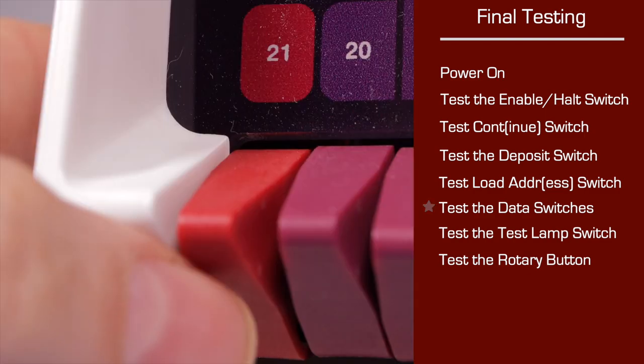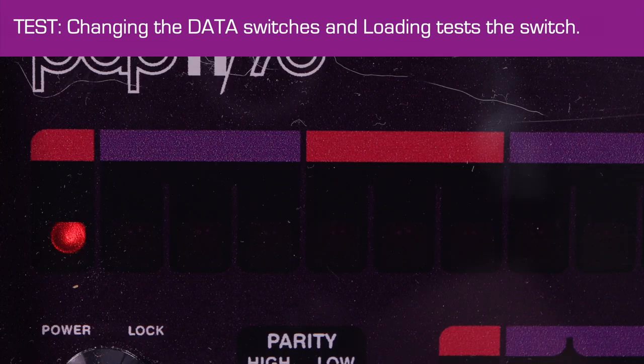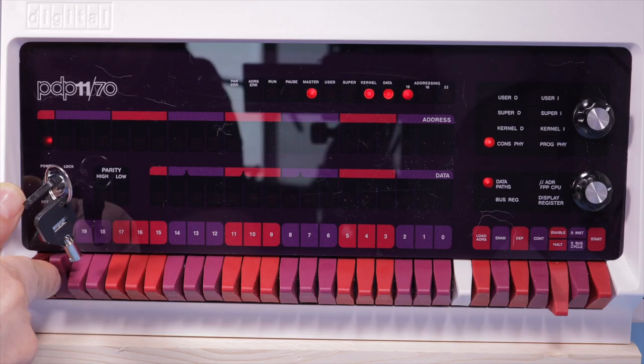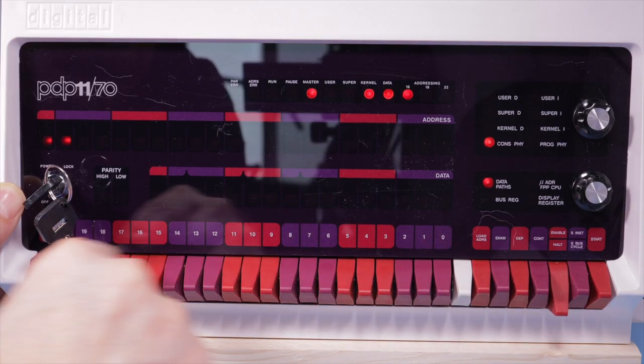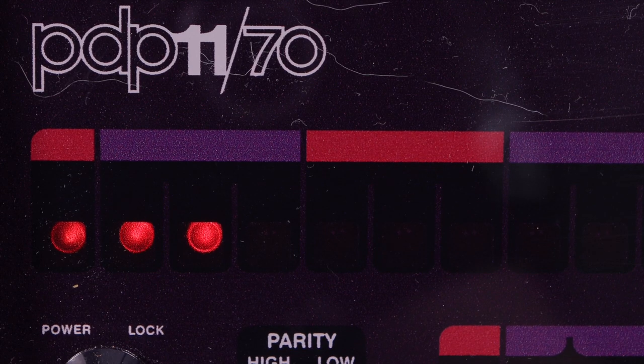Then lift the first data switch, followed by the load address switch. That lights the first lamp in the top row and proves the switch is working. Set each switch in the data row and do the load address again and again. Each LED should light up as it's set.